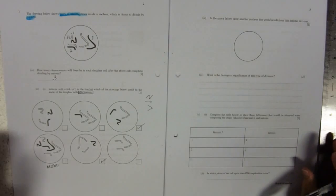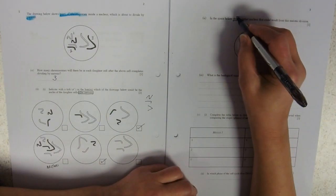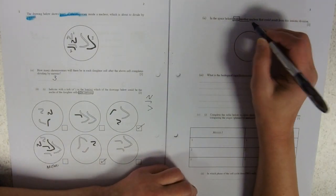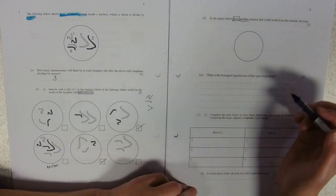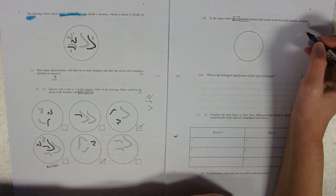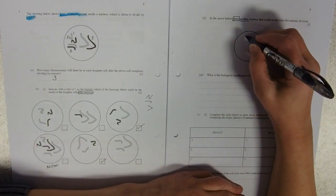In the space below, draw another nucleus, so a different one from these two, that could result from this meiotic division. So I need a zigzag one, a walking stick one, and a big V-shaped one.